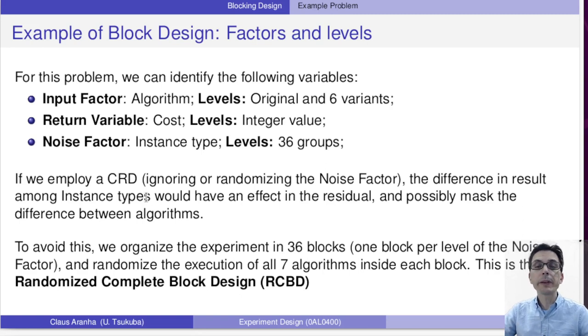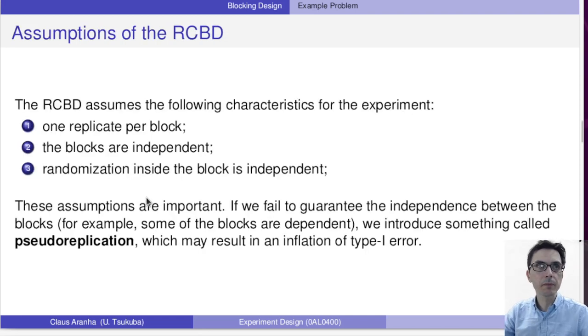To avoid this, what we do is organize the experiment into thirty-six blocks, one block for each problem type. Then we randomize the execution of all seven algorithms inside each block. All seven algorithms will run in all blocks, but inside each block we apply randomization. This is what we call the randomized complete block design. We have one block for each factor level and we run all algorithms in each block randomly.